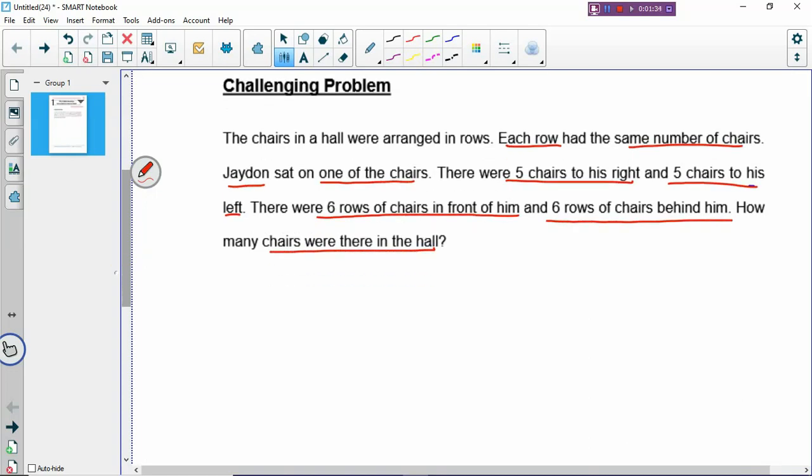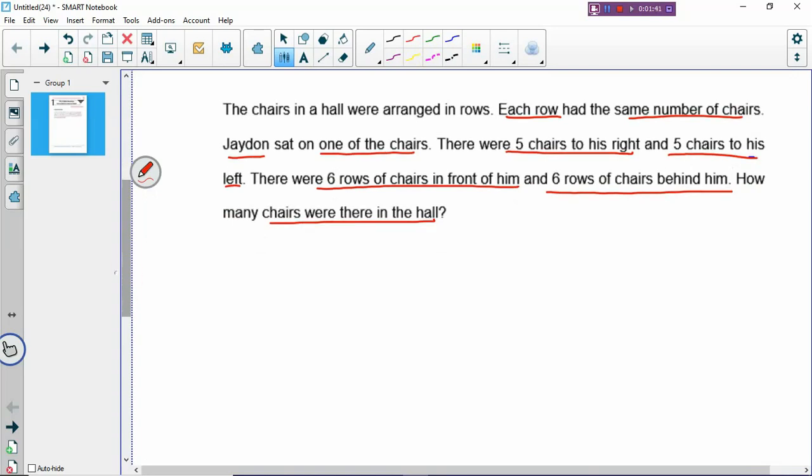It's going to be quite hard to solve if you don't have a method. I'm going to draw out this problem. How do we draw this problem? It's like model drawing. The first sentence you can't draw, you jump. You skip to the next sentence. Each row had the same number of chairs—if you don't know how to draw, you can jump. Jaden sat on one of the chairs and you're still not sure how to draw, you jump.